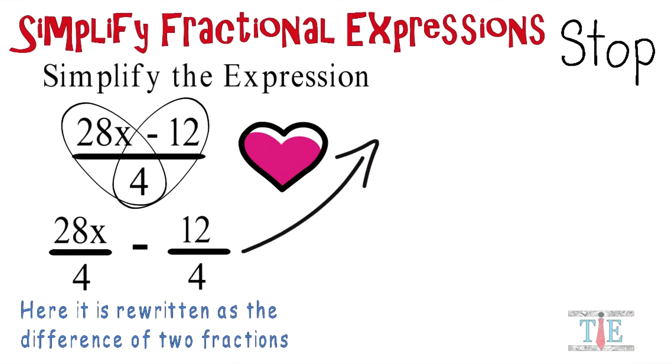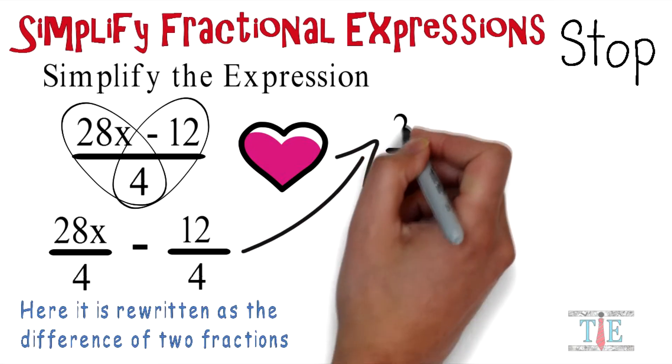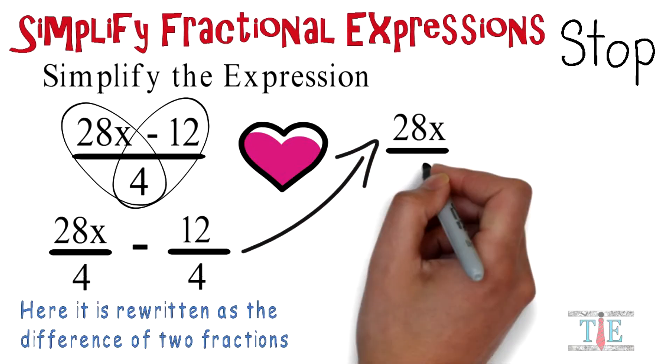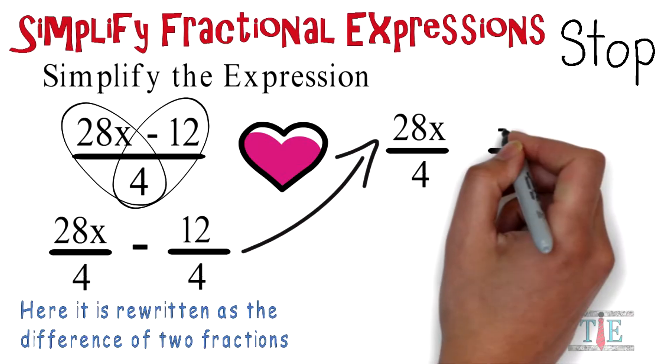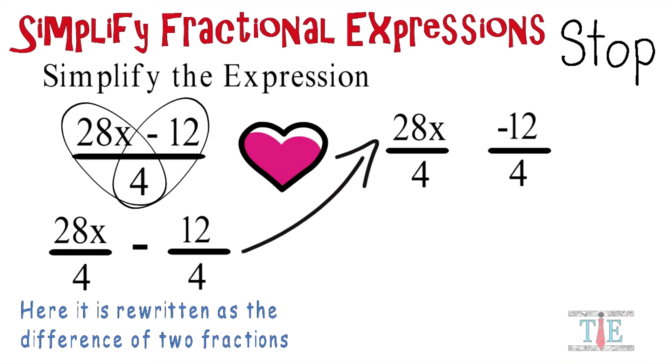But that's not the only way you can rewrite this. You can write it as 28x over 4 and negative 12 over 4. Here the negative is attached to the 12.